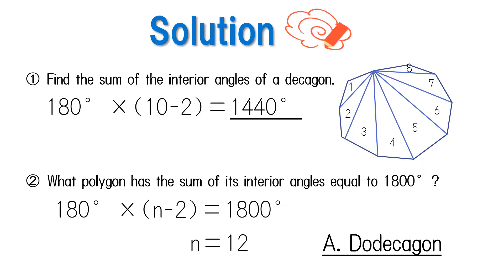Now let's check our answers. Since it is a decagon, substituting 10 for N in 180 times (N minus two) gives us 180 times (10 minus two), which equals 1440. So the answer is 1440 degrees.